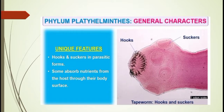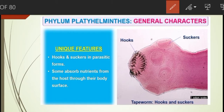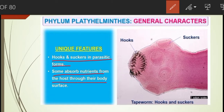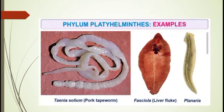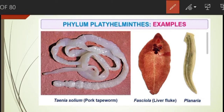Parasitic forms have hooks and suckers. With hooks they get attached to the host organism or substratum, and with suckers they absorb nutrients or suck blood from the host. Some absorb nutrients from the host through their body surface only — these are ectoparasites. Examples include Taenia solium (pork tapeworm), Fasciola (liver fluke), and Planaria.